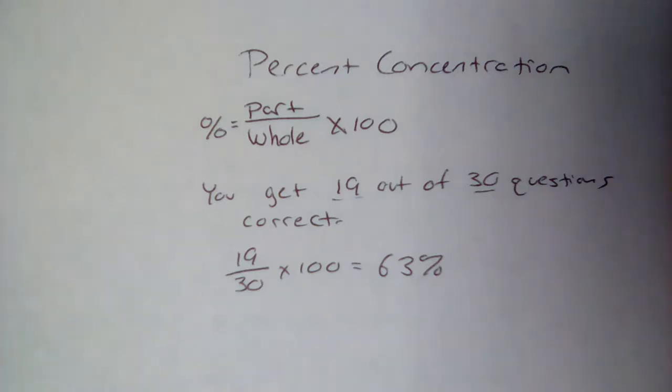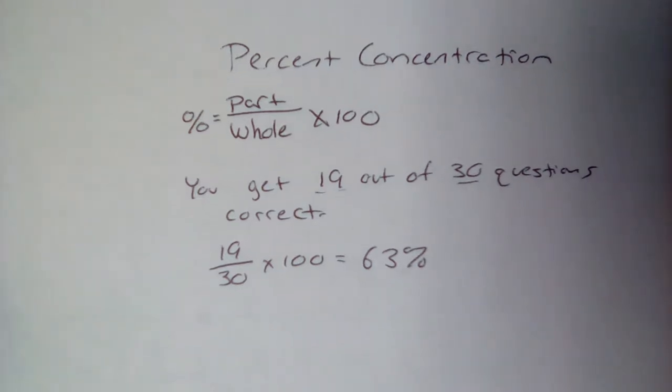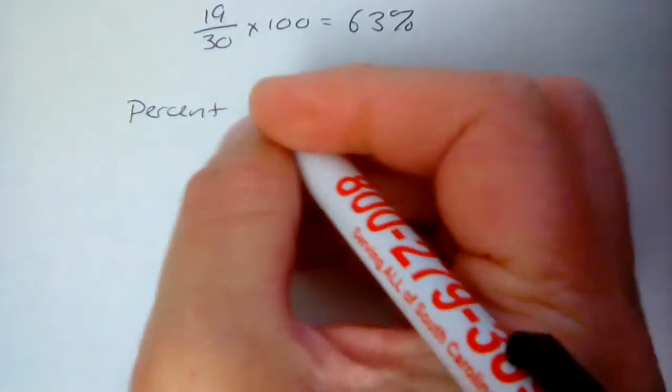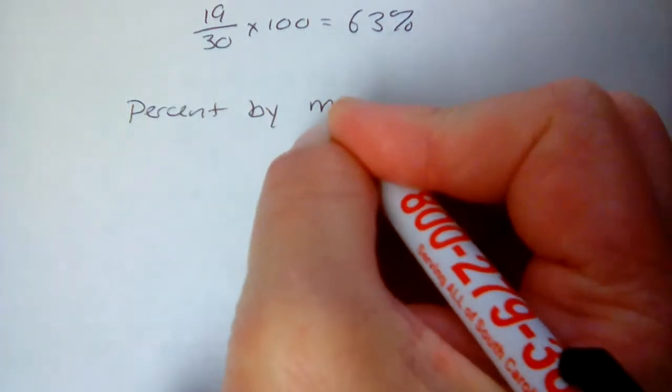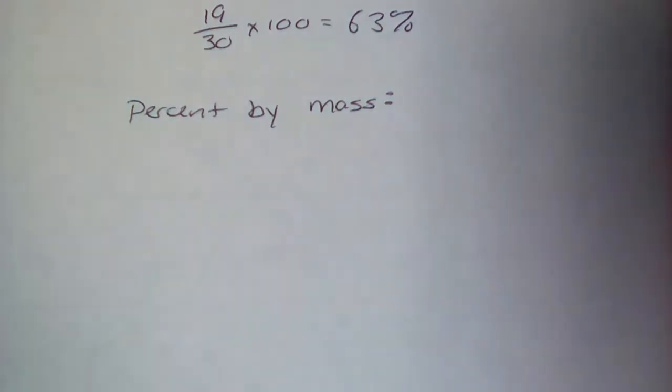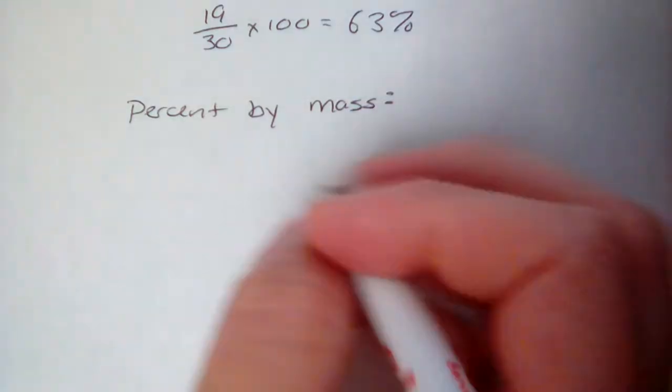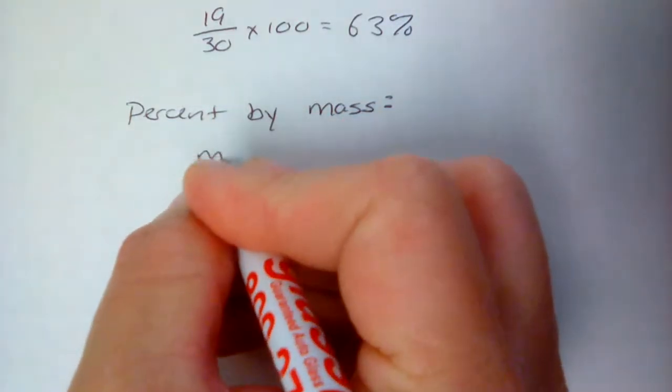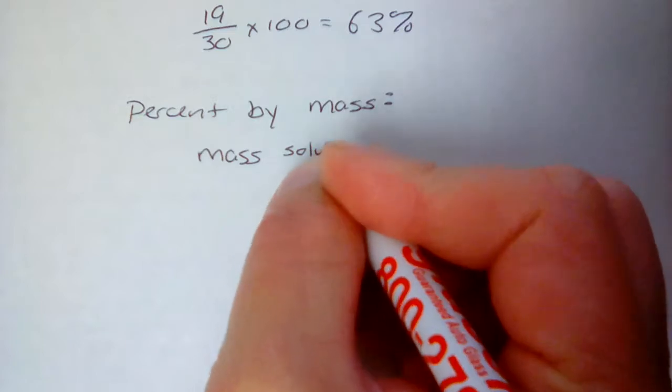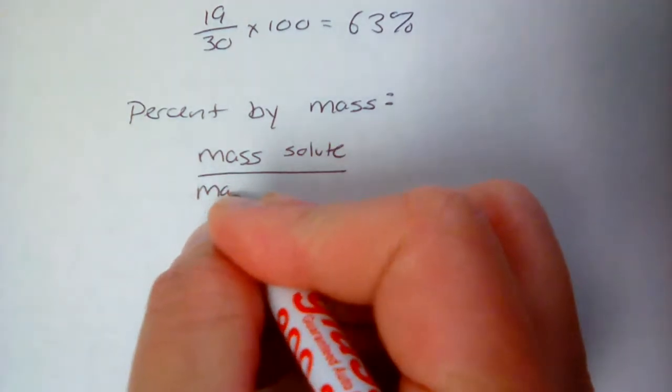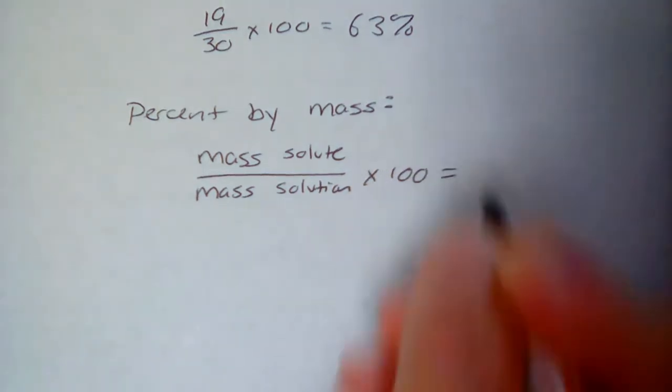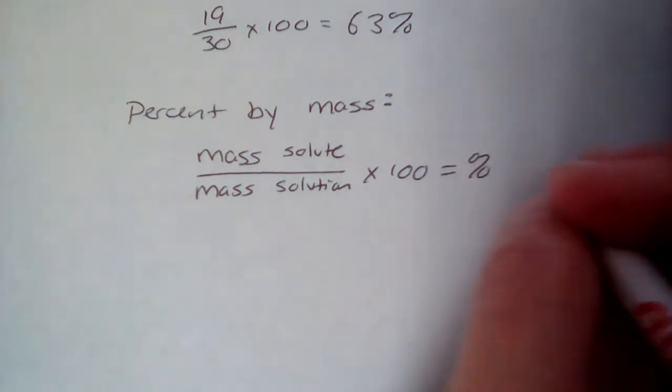And this is really no different, except we're dealing with volumes or masses. The two major types of percent concentrations that we deal with: there's percent by mass, where the grams or the kilograms of solute and solvent are measured out. And again, we're going to use the same general equation, part divided by whole times 100. So it would be the mass of the solute divided by the mass of the solution times 100. That's going to give you the percent by mass.